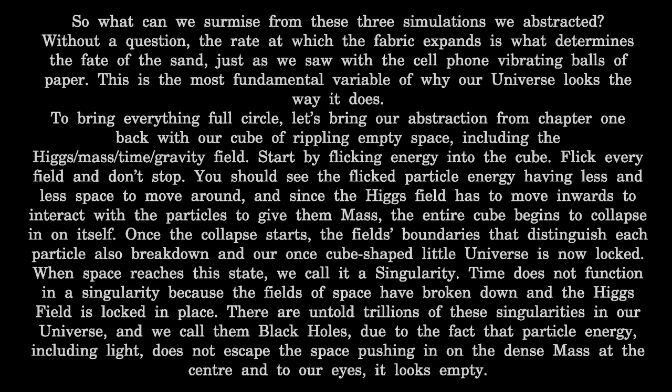To bring everything full circle, let's bring our abstraction from chapter 1 back with our cube of rippling empty space, including the Higgs-Mass-Time-Gravity field. Start by flicking energy into the cube — flick every field and don't stop. You should see the flicked particle energy having less and less space to move around, and since the Higgs field has to move inwards to interact with the particles to give them mass, the entire cube begins to collapse in on itself. Once the collapse starts, the field's boundaries that distinguish each particle also break down, and our once cube-shaped little universe is now locked. When space reaches this state, we call it a singularity.